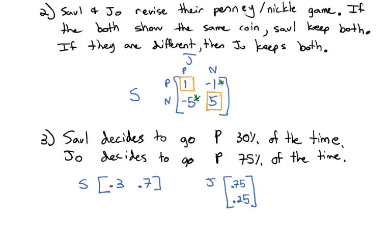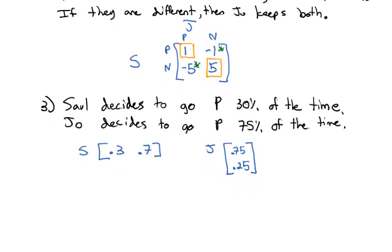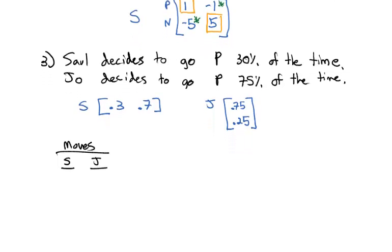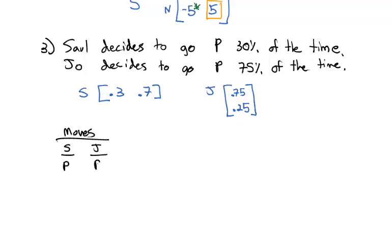Let's look at what's going to happen. We'll make a table of all possible moves. Saul could choose penny and Joe could choose penny; Saul could choose penny and Joe could choose nickel; Saul could choose nickel and Joe could choose penny; or Saul could choose nickel and Joe could choose nickel. Those are the four possible move combinations, and we'll look at the probability that each one happens.